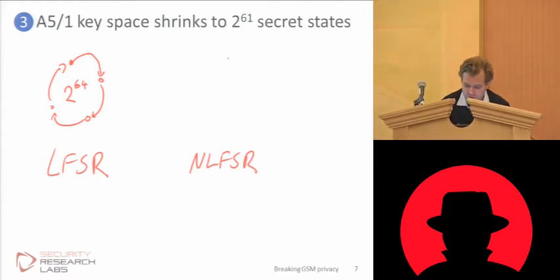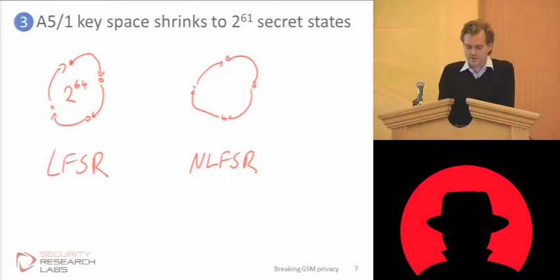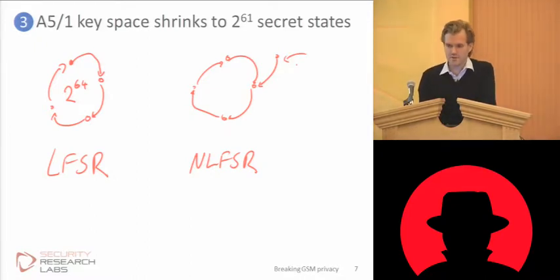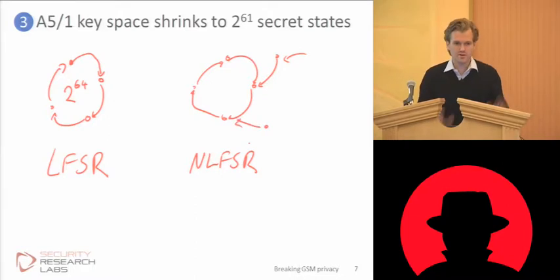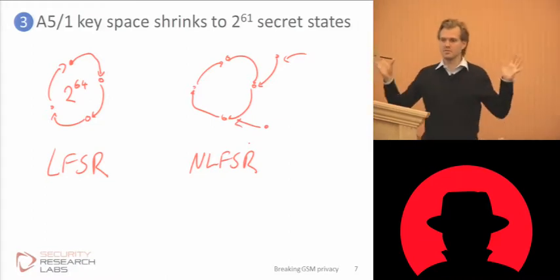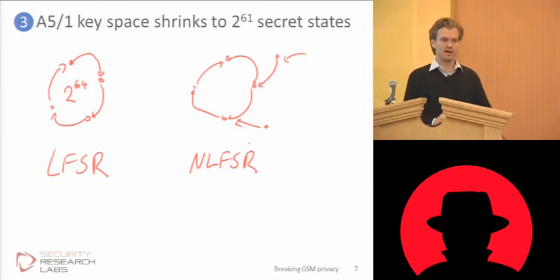Shown visually, we still do have a circle — in fact several circles. However, there are branches of values that compute the same output but are not part of the circle and will never be reached again. The circle in the middle is much smaller and is still a circle in itself, but there are some values — the other inputs that lead to the same output — that are just not part of that circle.